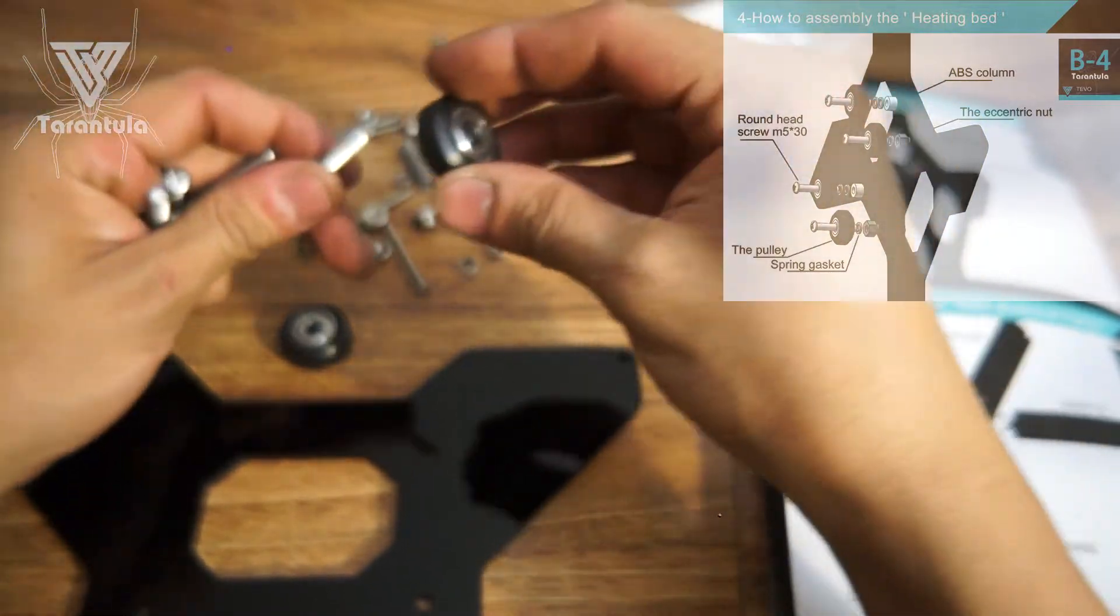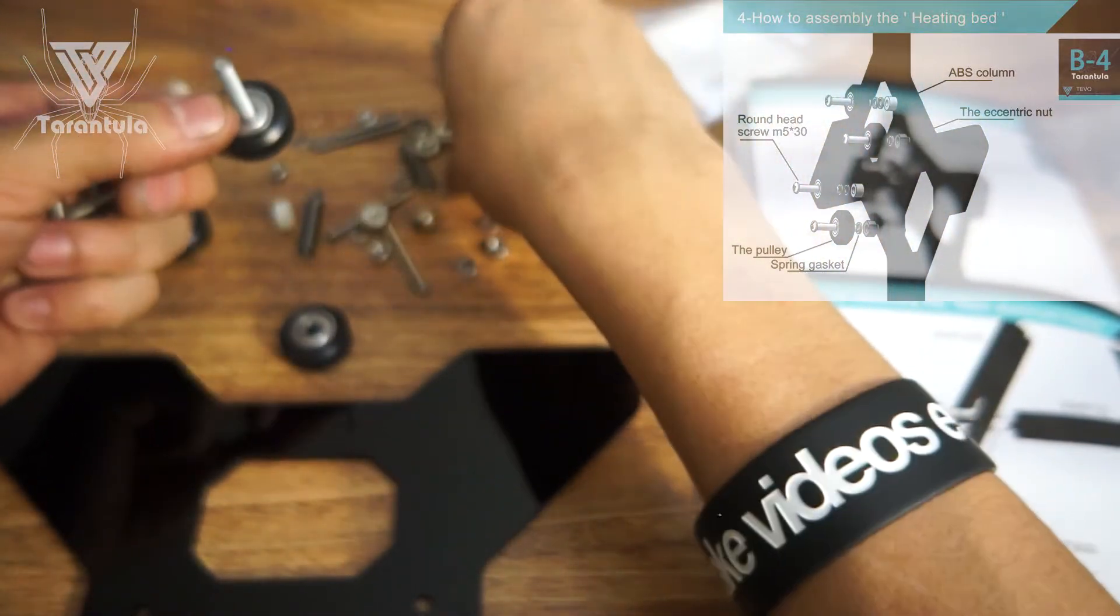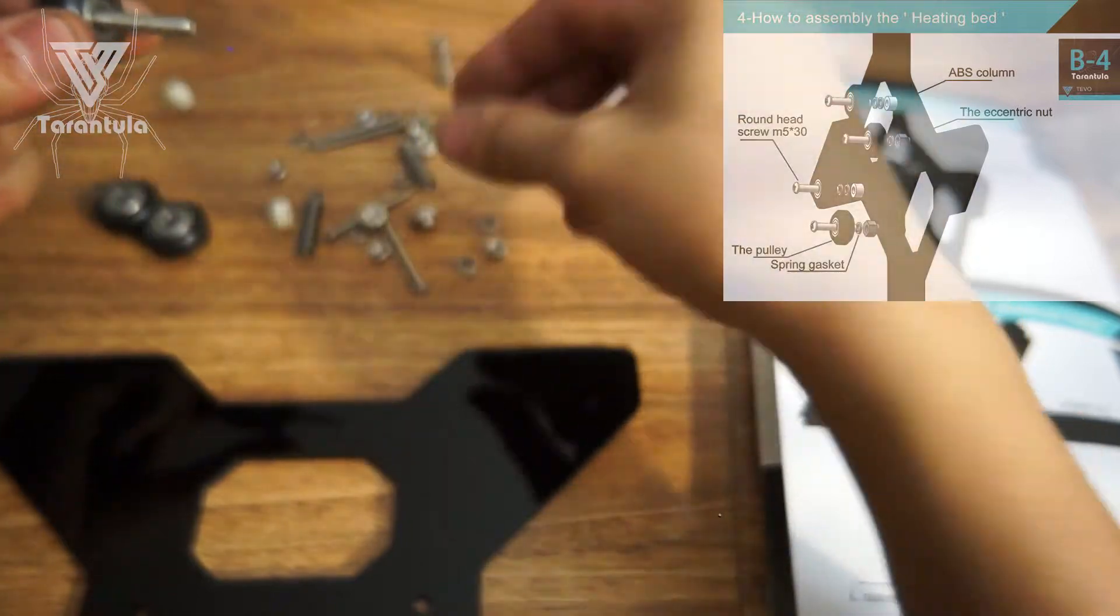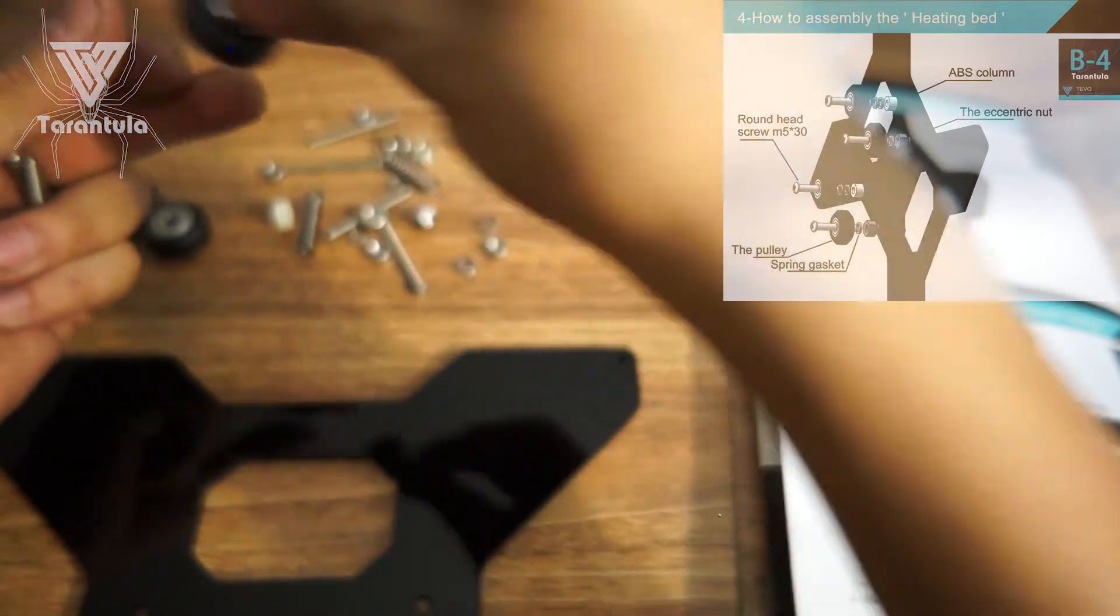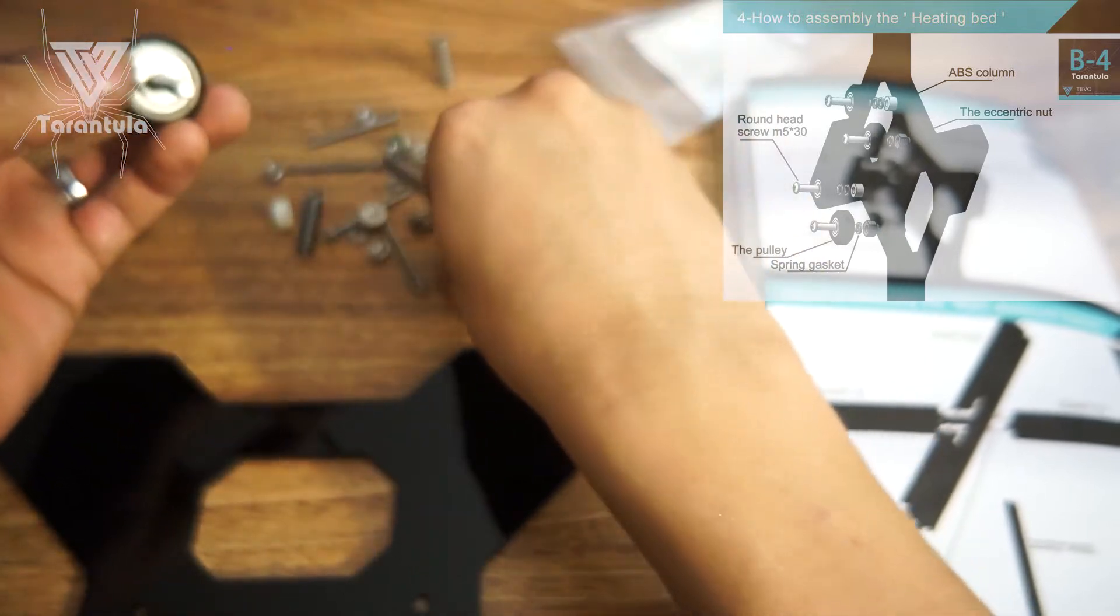So we're going to do this the same way. On the standard ones we'll do the eccentric nuts. So if you can see what I'm doing here: bearing, spring washer, eccentric nut. On these ones you're going to go bearing, two spring washers, nylon washer.